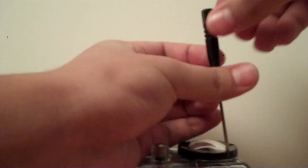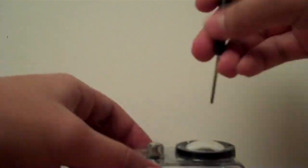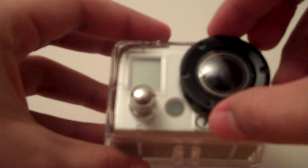The first thing you want to do is unscrew all the screws on the black ring of the GoPro housing. Once you have all the screws out, remove the black ring and the old lens.